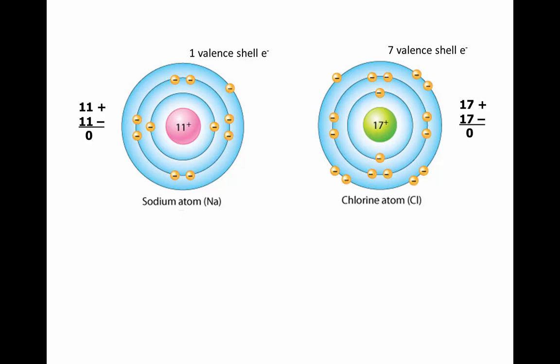Sodium has 11 protons housed in the nucleus and 11 electrons filling energy levels, so positives equal negatives — zero charge, neutral. Chlorine has 17 protons and 17 electrons filling energy levels — positives equal negatives, zero charge, neutral. Sodium's electrons fill energy levels with two in the first and eight in the second, leaving its valence shell electron number as one — not stable.